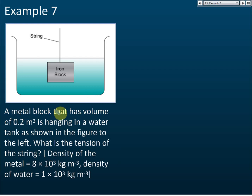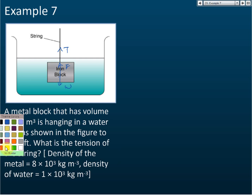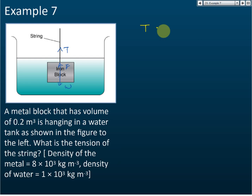Example seven: a metal block with volume 0.2 cubic meters is hanging in a water tank as shown in the figure. What is the tension of the string? For this case, we know that there are three forces acting on this object: the weight, the upthrust, and the tension. These three forces are in equilibrium, so the tension plus the upthrust is equal to the weight. Therefore, the tension equals the weight minus the upthrust.